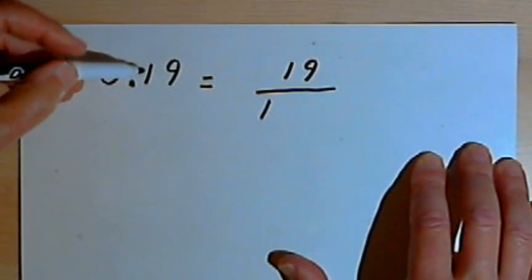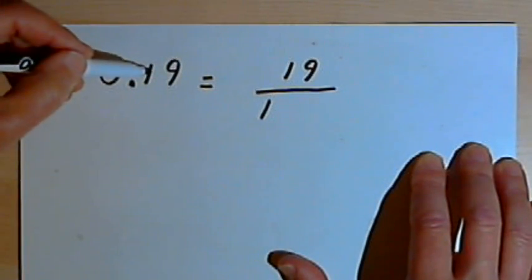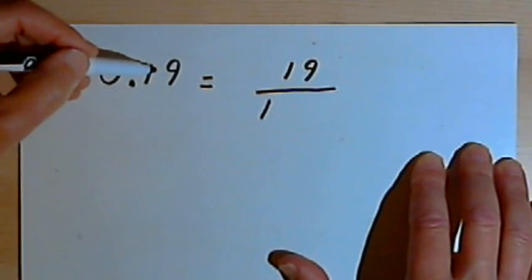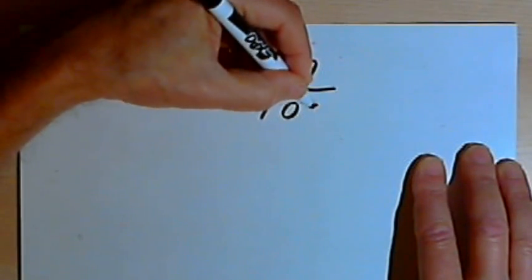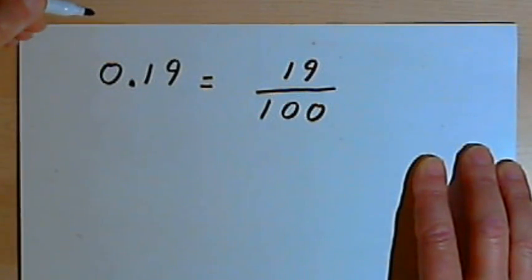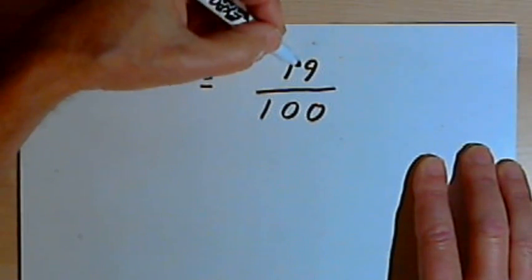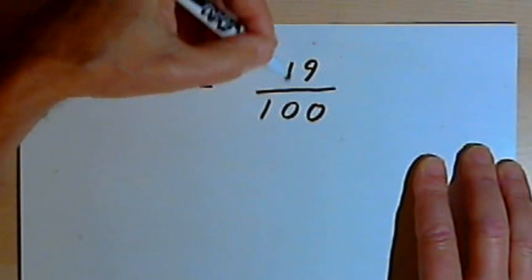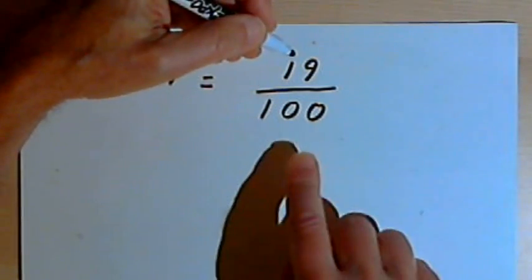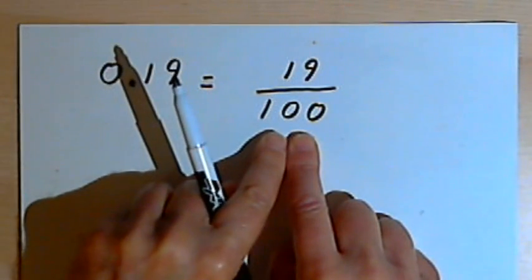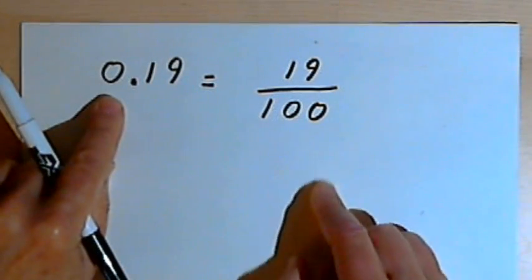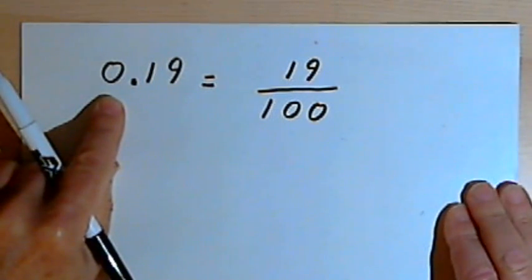I'm going to count the number of digits after the decimal point, the number of digits to the right of the decimal point. Well, there were two digits there. For each of those digits, I'm going to put a 0 after that 1 in the denominator. And now I've got 19 over 100. I can't reduce this fraction, so that's basically what I'm left with. So 19 over 100 is the fraction equivalent for the decimal 0.19.